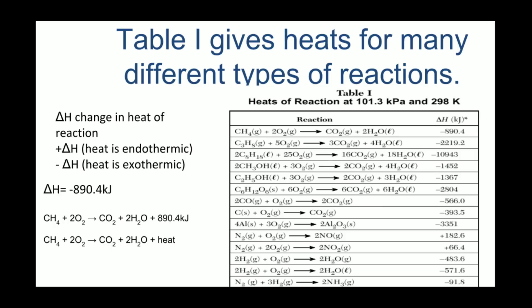Reference table I gives the heat of reaction or the difference between the potential energy of the products minus the potential energy of the reactants for many chemical reactions. On this table, chemical reactions with a negative value are exothermic and chemical reactions with a positive value are endothermic. Here, the top reaction is the combustion of methane. Notice that the delta H value is a negative number. If I wanted to write the word heat or the heat term in this exothermic reaction, the word heat or the value of heat must appear after the arrow or on the product side.